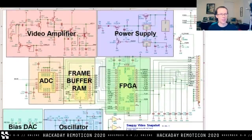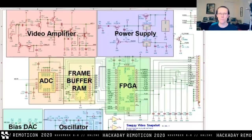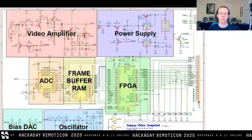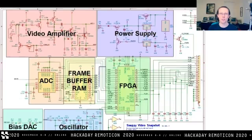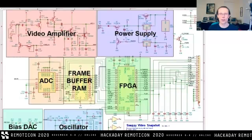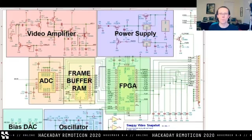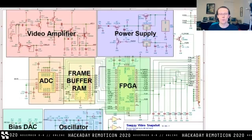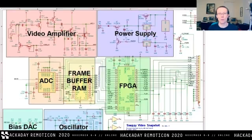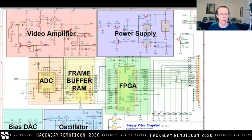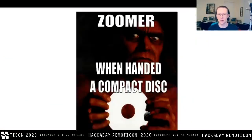Here's a different device — a Snappy Video Snapshot. I've put together a block diagram with a schematic underneath it, the result of a couple of hours of reverse engineering work. If you don't know what a Snappy Video Snapshot was: back in the 90s, all you had was a parallel port to connect peripherals to your computer, and there was no USB. So if you wanted to digitize analog video, you'd buy this little device that plugged into the parallel port. It was a very clever design using an FPGA and some other components.